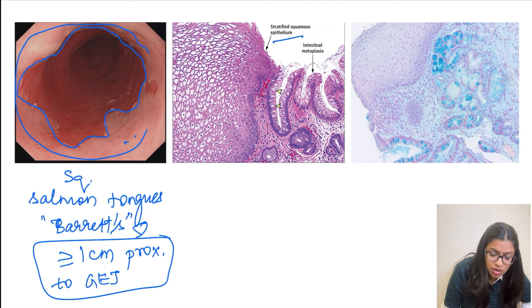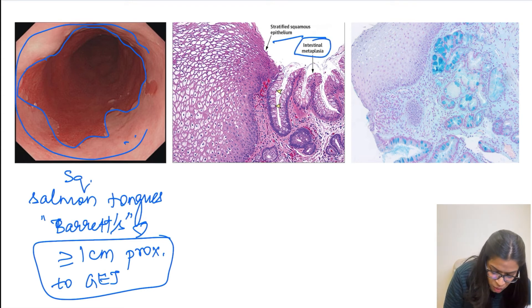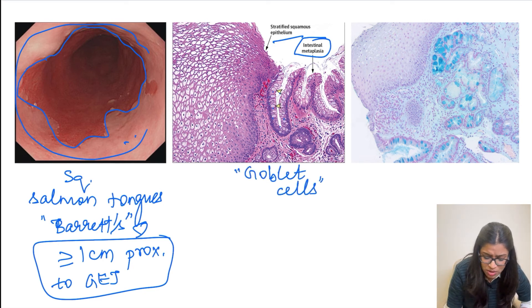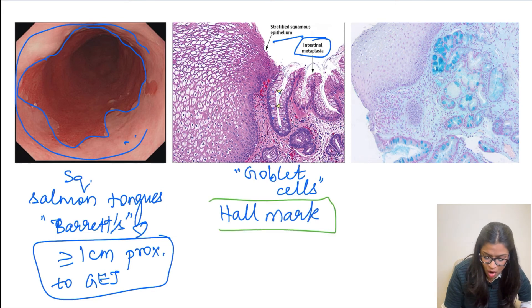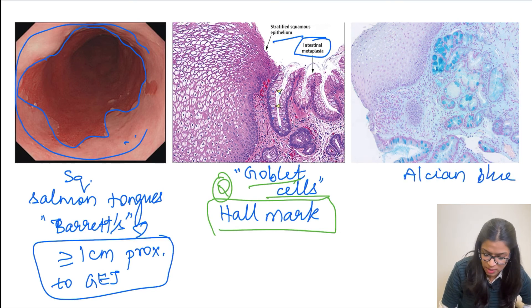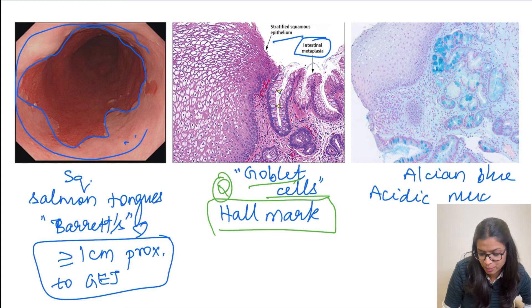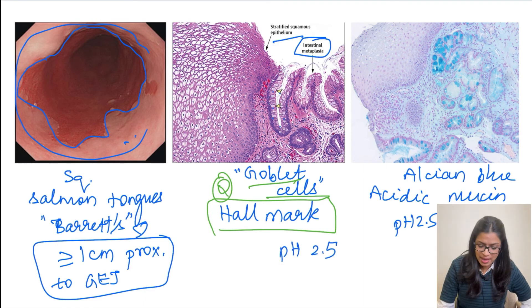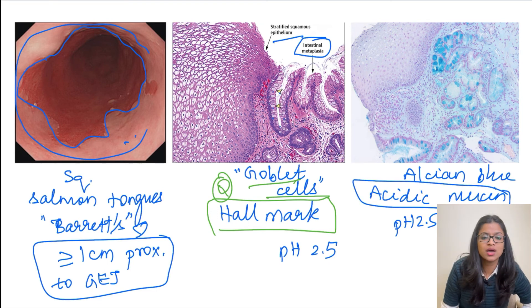Histologically, the normal squamous epithelium of the lower esophagus is replaced by intestinal metaplasia. The hallmark of Barrett's esophagus is the presence of goblet cells, seen as empty-looking spaces containing acidic mucin. A special stain called Alcian blue stains acidic mucin at a pH of 2.5, causing it to appear blue in color.